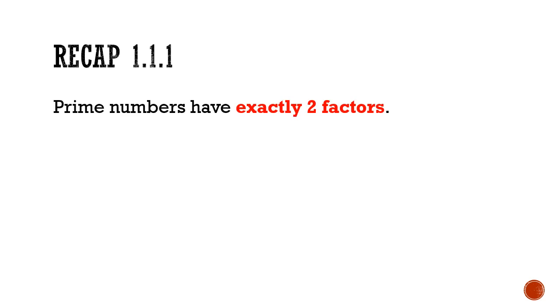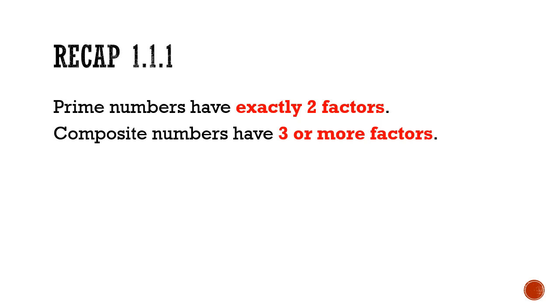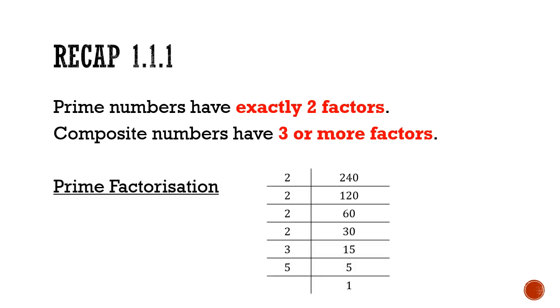Let's first begin with a recap of what we've covered so far. In part 1, we learned that prime numbers are numbers with exactly two factors, while composite numbers have three or more factors. We also learned how to find the first 25 prime numbers using the Sieve of Eratosthenes, and how to use the ladder method to prime factorize a number and express the result in index notation.